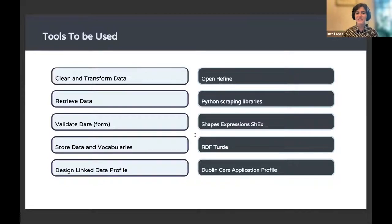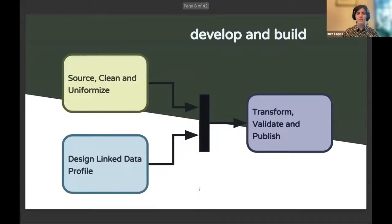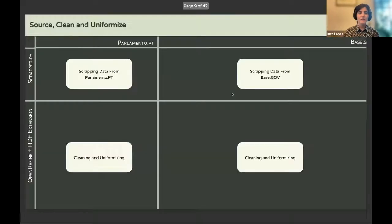SHEX expressions written in ShEx compact were used for validation and documentation of the application profile. All data is parsed in RDF Turtle, and the application profile used to describe the data is the Dublin Core Application Profile. There were three steps: source cleaning and uniformizing the data; designing the linked data profile; and actually transforming, validating, and publishing the data.